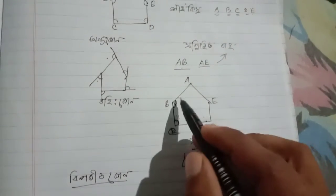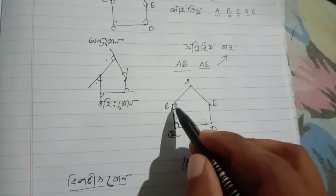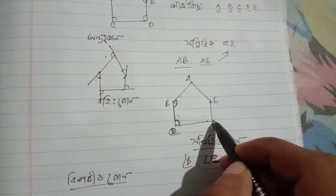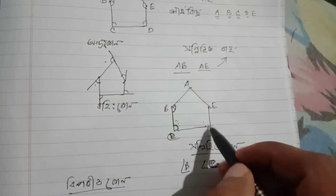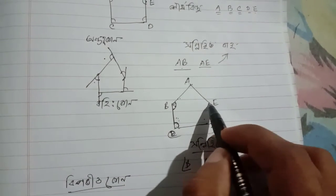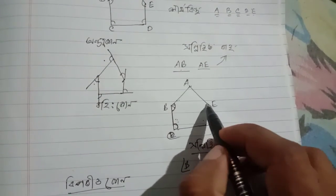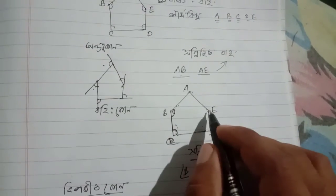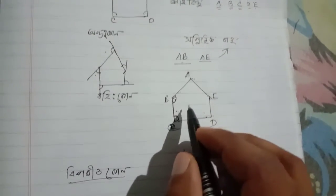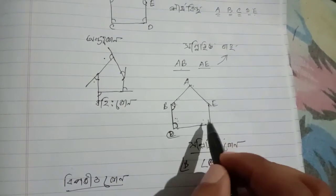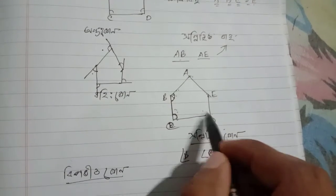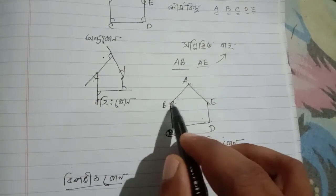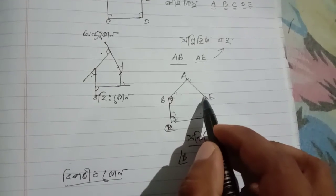A reflex angle at a vertex — if two sides meet and the angle between them is a reflex angle, it is not considered an interior angle. The adjacent interior angle in that case is noted separately.